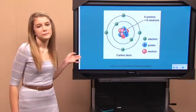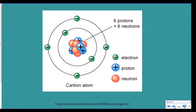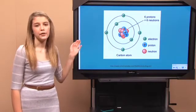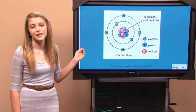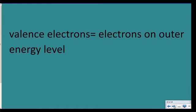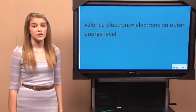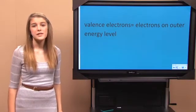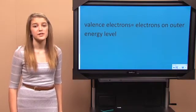Look at carbon again. See how two of its electrons fill up the first energy level, and there's four electrons out on the second level? Well, the electrons on the outer energy level are all called valence electrons. Let's look at that definition. You might want to write that down. The number of valence electrons is real important. Elements in the same group have the same number of valence electrons.